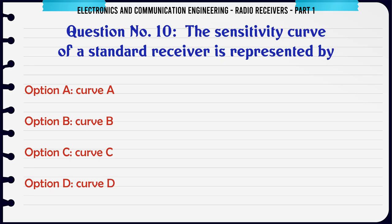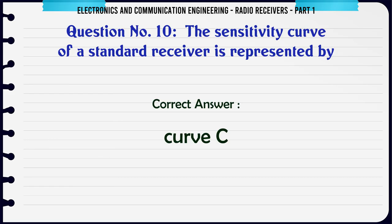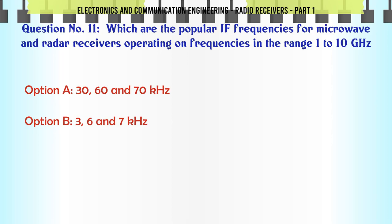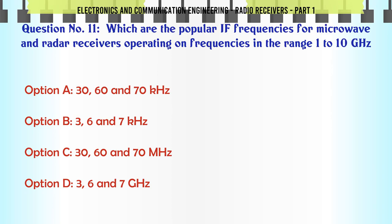The sensitivity curve of a standard receiver is represented by: a. Curve A. b. Curve B. c. Curve C. d. Curve D. The correct answer is Curve C.